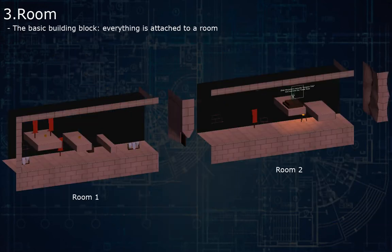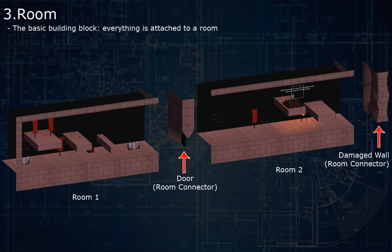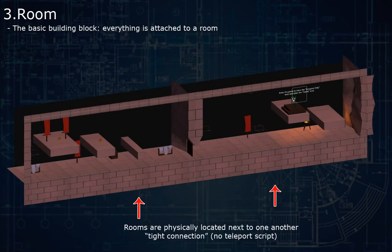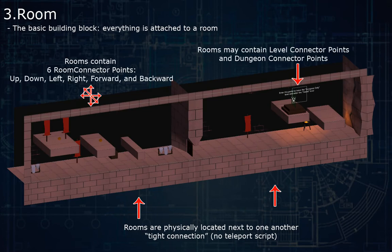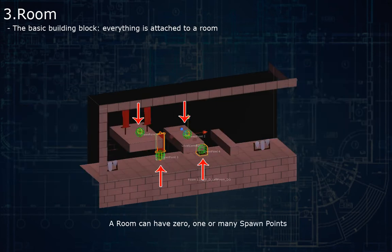The rooms are the basic building block on which everything is built. Rooms will connect to each other through room connectors, and these are a site connection, meaning that your rooms will be physically located next to one another, so you do not need a teleport script for that. The rooms will contain connection points to configure the room connectors, level connectors, and dungeon connectors. The rooms also contain spawn points where you can configure spawnables, and you can have as many of them as you want in a room.